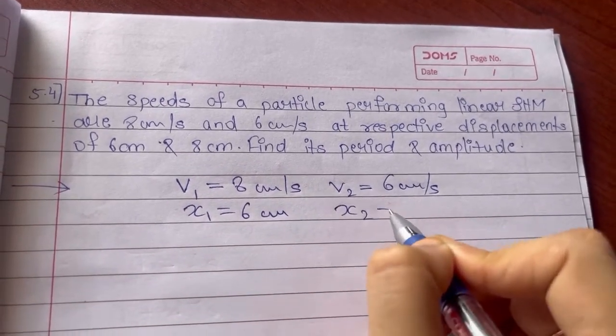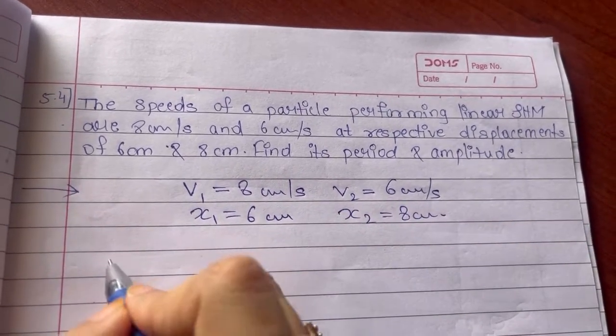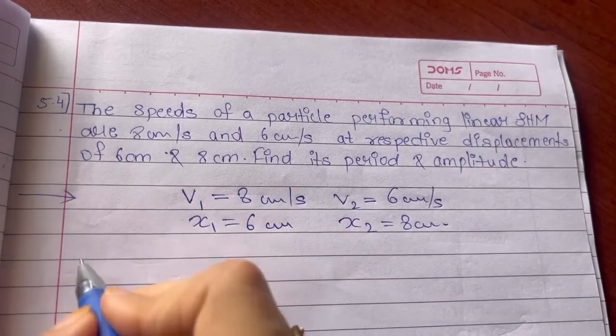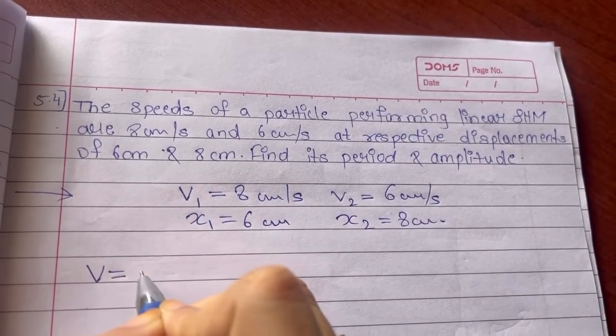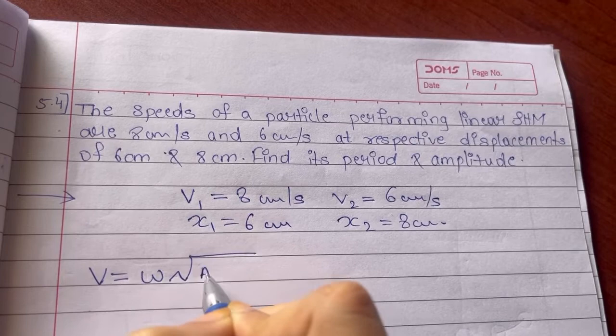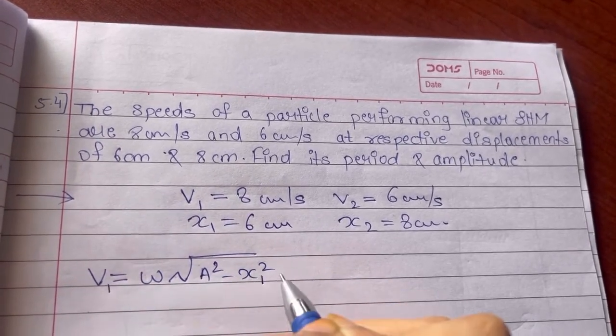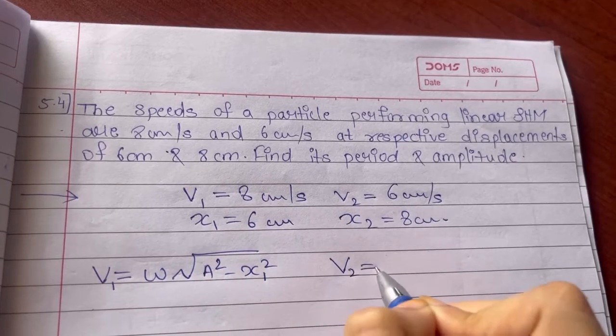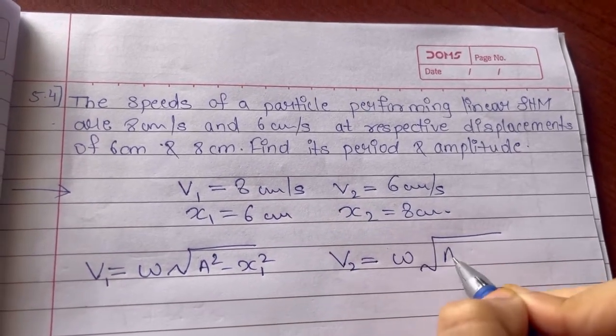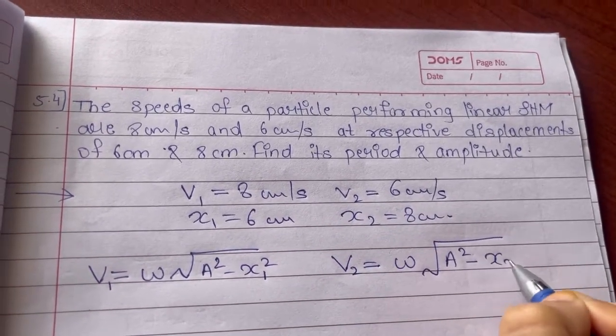and x2 is 8 cm. Now I have the formula of velocity in terms of displacement, that is omega under root A square minus x square. So it will be v1 equals omega root A square minus x1 square. V2 that will be equal to omega A square minus x2 square.